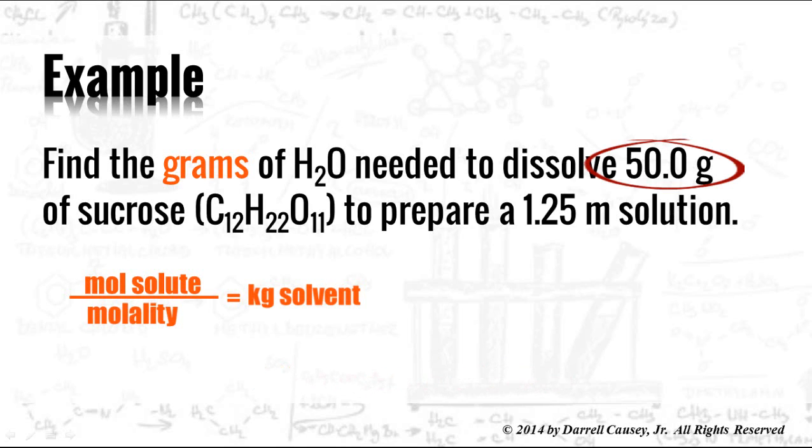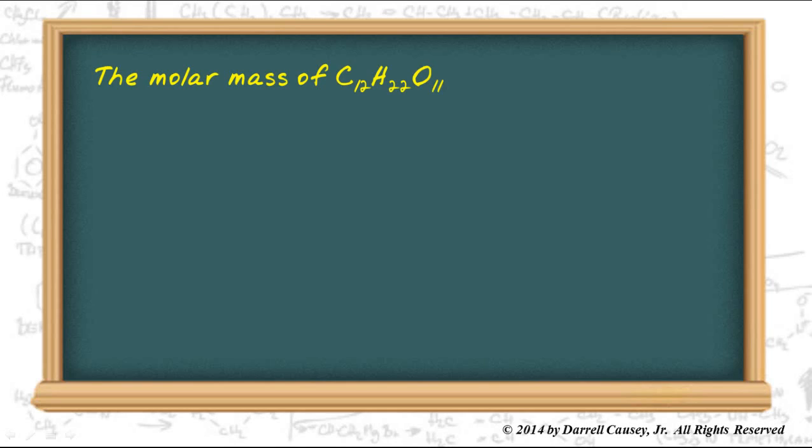Now we have 50 grams of sucrose and we're going to need to change that to moles, and we have to prepare a 1.25 molal solution. That's our molality and we could just plug and chug after we find the molar mass. Get your periodic table out, add these all up: 12 carbons, 22 hydrogens, and 11 oxygen, and you'll come up with 342.34 grams per mole. There's our molar mass.